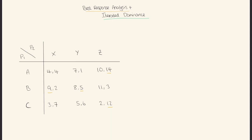We do the same for option Y: player two chooses Y and player one has options A, B, and C. The highest payoff is eight, because eight is more than five and more than seven. Then for option Z, player one will choose option B because eleven is the highest payoff for them.